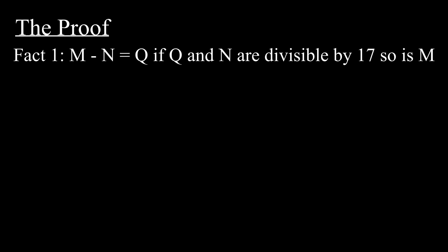The proof of this rule comes about from a few different facts. First off, if we subtract two numbers and get a multiple of 17, then that means if one of them is a multiple of 17, then the other is.